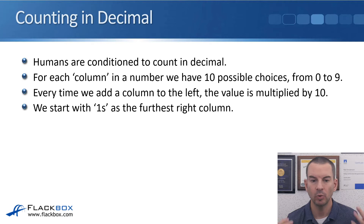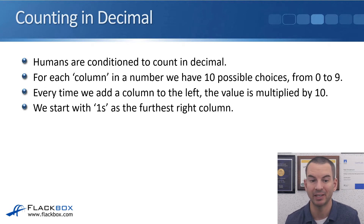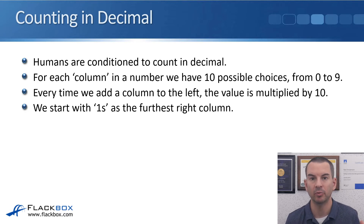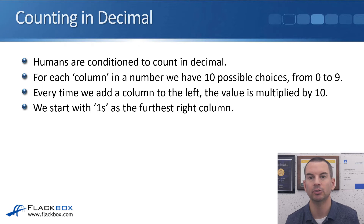As humans, we are conditioned to count in decimal. It's how we're taught to do it from a really young age, and we do it now without thinking about it. When we write a number down, for each column in the number, we have got 10 possible choices from 0 through to 9, and every time we add a column to the left, the value is multiplied by 10.